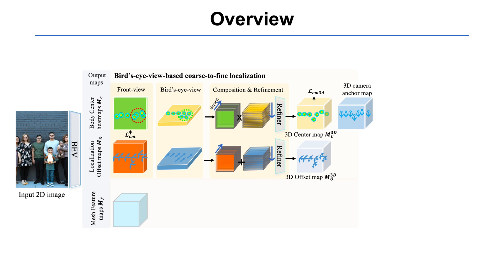With the location of these detected body centers, we sample at the corresponding locations in the 3D camera anchor map and 3D offset map to obtain the 3D anchor vector and 3D offset vector. To obtain the fine 3D translation of each person, we add the sampled 3D offset vector to the sampled 3D camera anchor vector to refine the localization prediction.